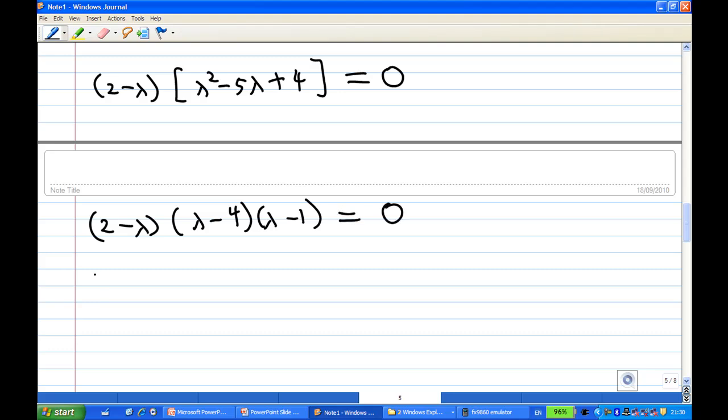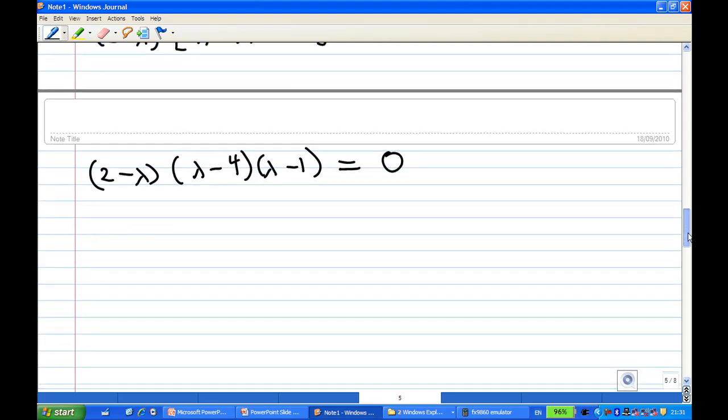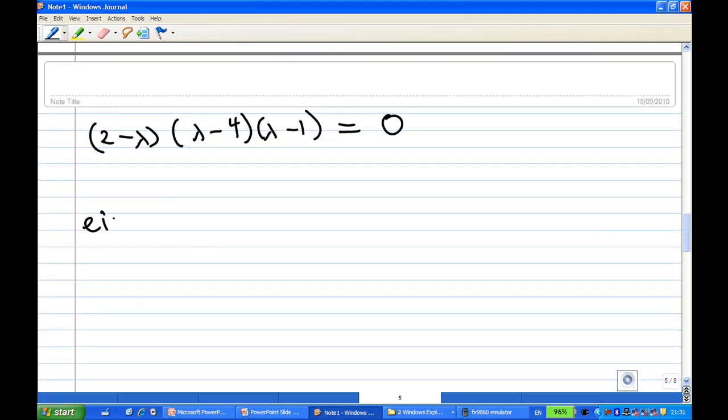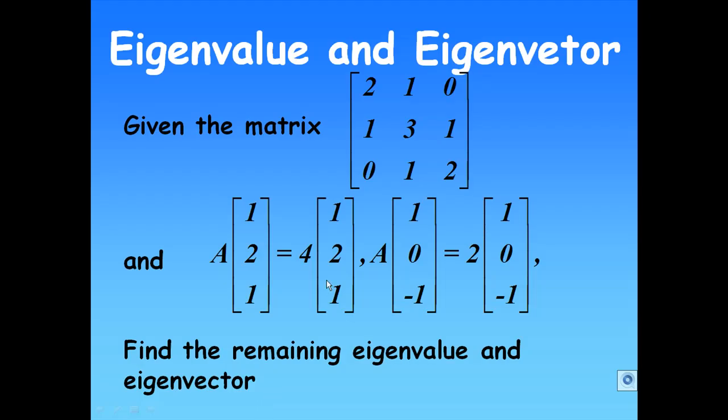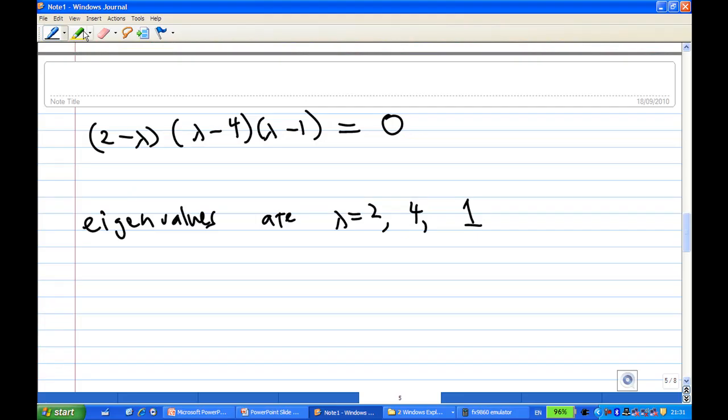So the eigenvalues are λ = 2, 4, and 1. From the question, we know that the eigenvalues 4 and 2 were given, so the remaining eigenvalue is 1.